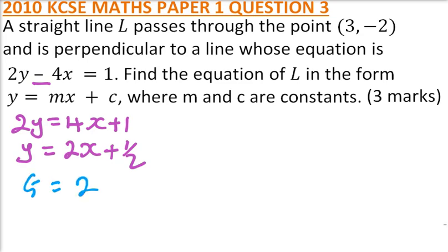The gradient of line L is equal to -1/2, because when you multiply 2 times -1/2 you should always get -1.